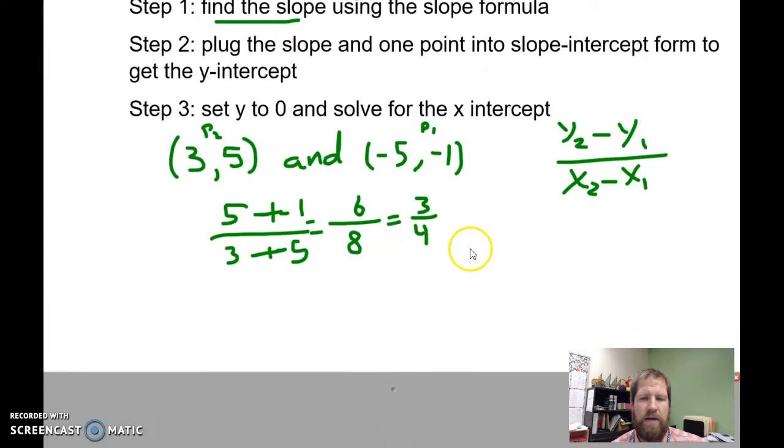But what I can do is put in my slope and one of these points and solve for my y-intercept. So if I'm going to do that, y equals mx plus b.